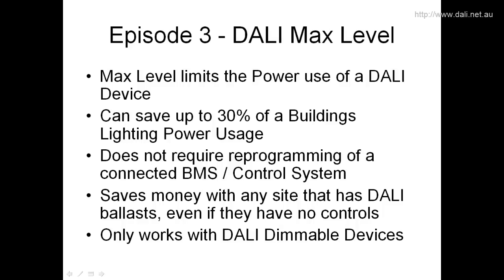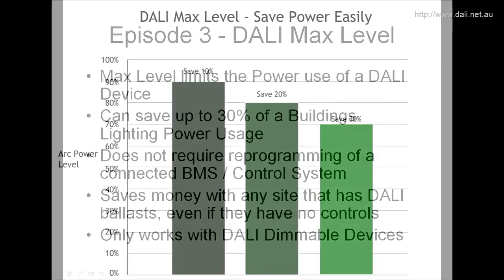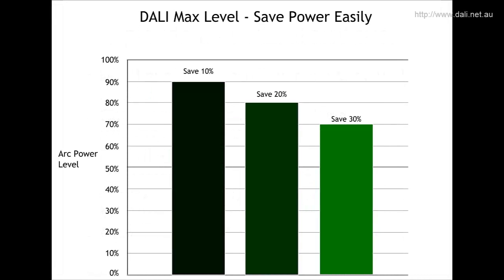Hello and welcome to Episode 3 of our DALI School. In this episode we're looking at DALI Max Level, which very simply limits the power use of a DALI device. If you're a sustainability officer or somebody looking after a building and you want to save money, this is a great episode for you because with this setting you can easily save up to 10, 20, or 30% of your building's lighting power usage without installing any hardware. This is a really quick, easy, simple solution with big benefits.